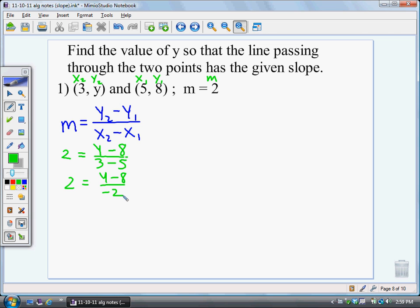Well, there's a lot of different things you can do to solve it. If I were going to do this, I would multiply each side by negative 2. And if you multiply by negative 2, this is going to be negative 4. This would be just y minus 8. And now I'm going to add 8 to both sides. If you add 8 to both sides, this would be 4. And that would be y. That's the answer. So the missing y coordinate is 4.